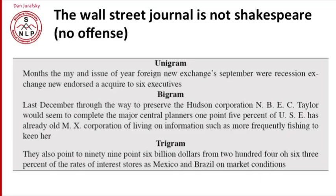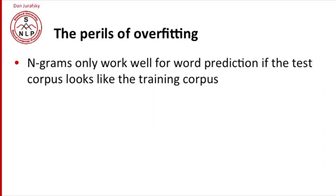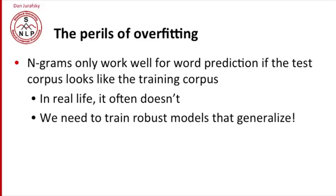So what's the lesson from this? One lesson is the perils of overfitting. N-grams only work well for word prediction if the test corpus looks like the training corpus. If you test on Shakespeare but you trained on the Wall Street Journal, you're not going to predict words very well. So in real life, this just doesn't happen. So we'd like to train robust models that do a better job of generalizing.